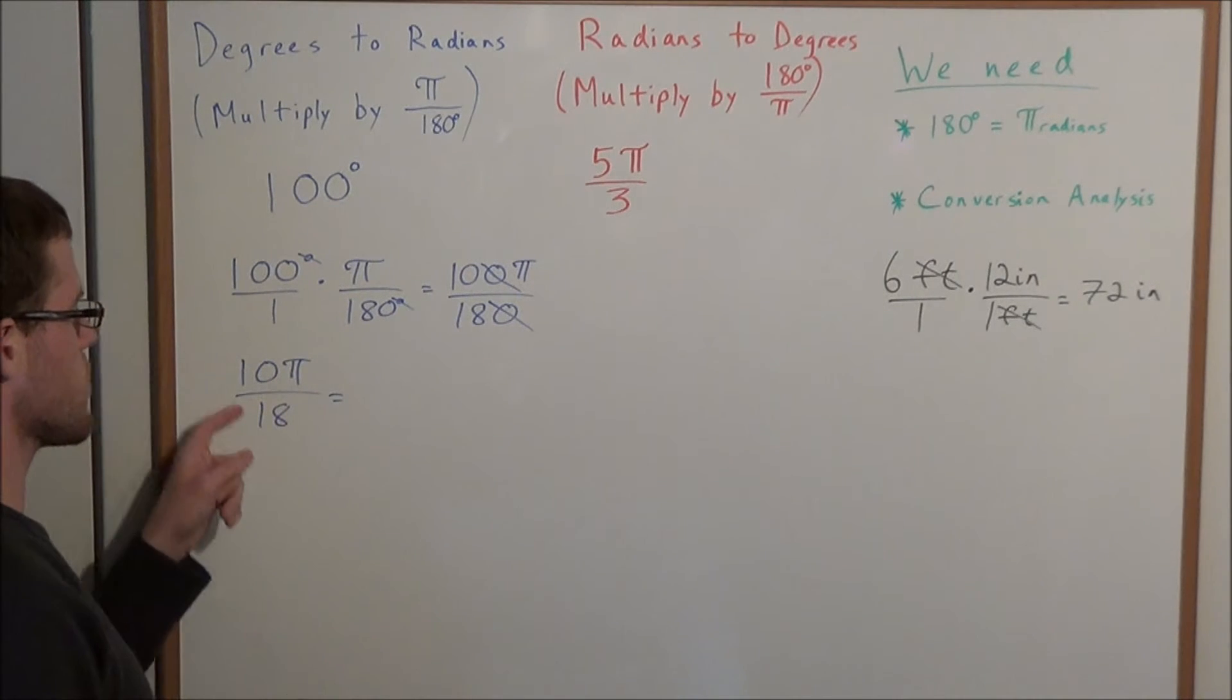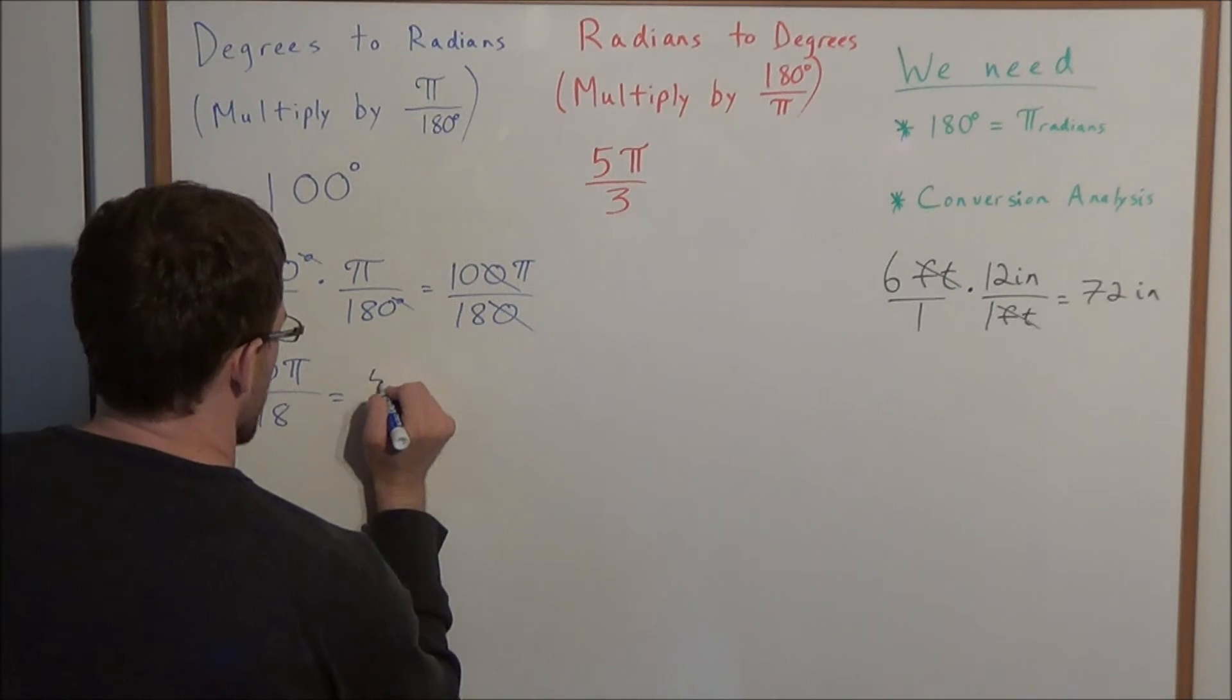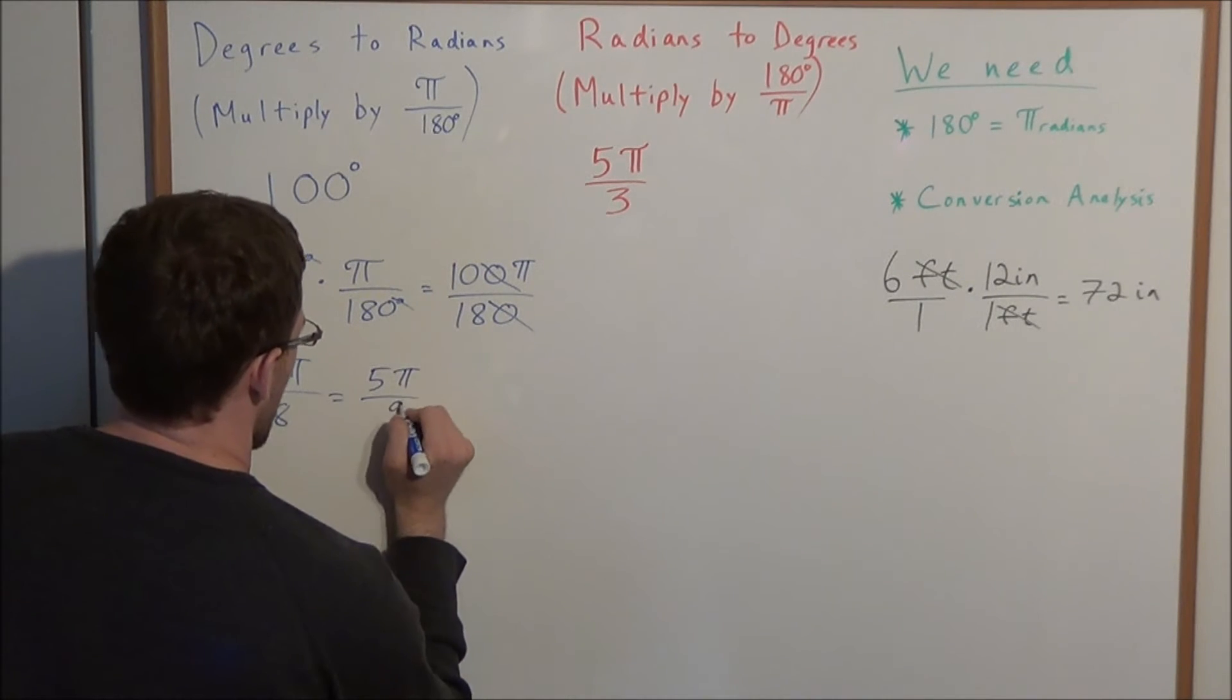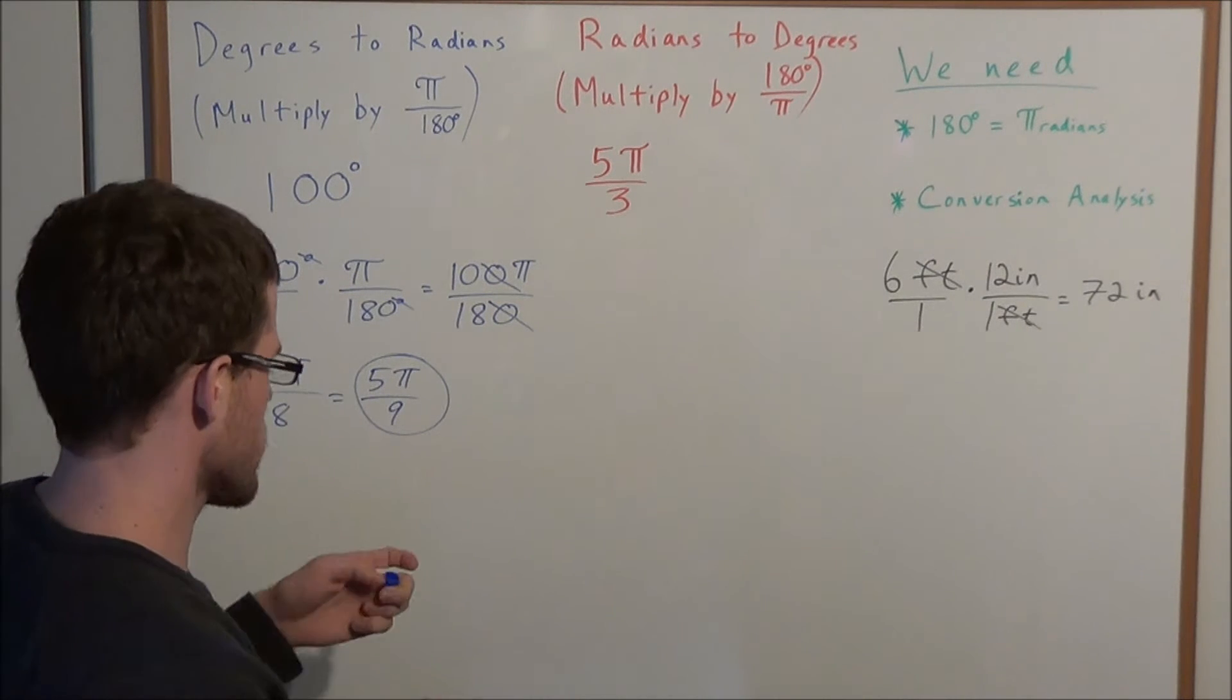And when we simplify this once further, we are going to divide the numerator and denominator by 2, and we have 5π over 9 radians. And this is how we would convert 100 degrees to radians.